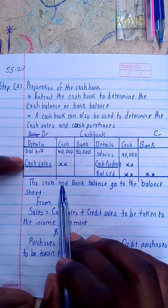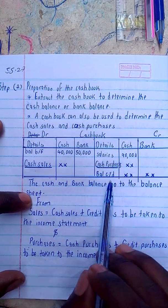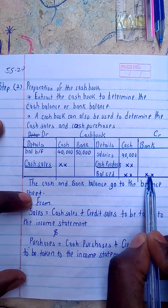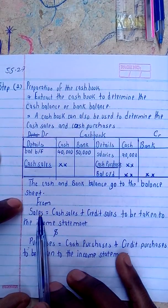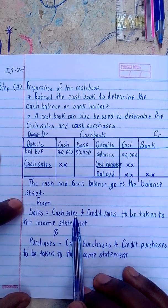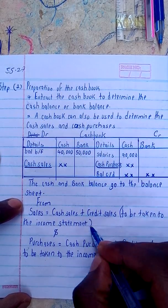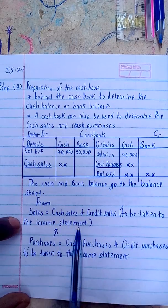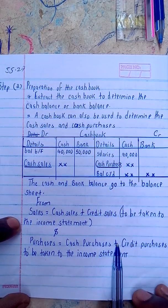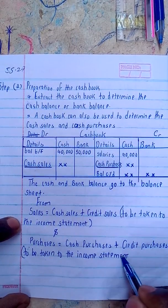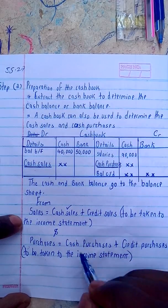Moving on, the cash and bank balance go to the balance sheet. After determining this balance and this balance, they'll go to the balance sheet. We know sales equals cash sales plus credit sales, and this is to be taken to the income statement — that is the profit and loss. And again, purchases equals cash purchases plus credit purchases, which will also go to the income statement. So we have used this to determine the cash sales and cash purchases.